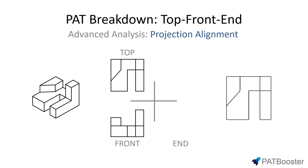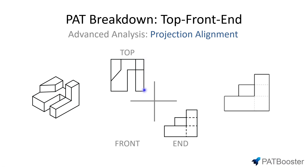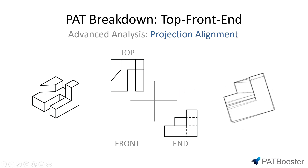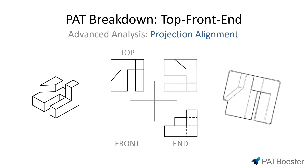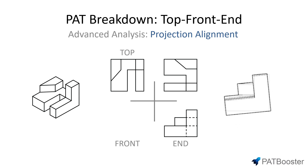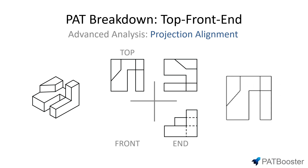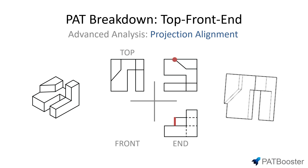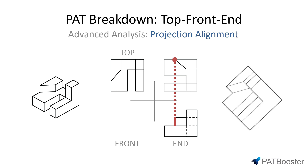Now, what if we are only given the top and end view? It's not so easy because our two given views are not really aligned — we can't draw simple vertical or horizontal lines. You have a couple of options. First, you can mentally imagine this edge coming all the way down here, essentially toppling the top view on its side, so it would look something like this. From here, we can again draw vertical lines and match extensions on the top view to extensions on the end view — for example, this edge here would correspond to this point here.